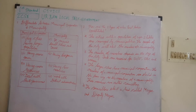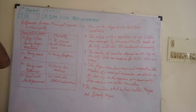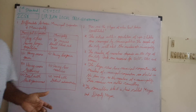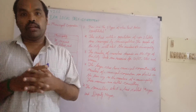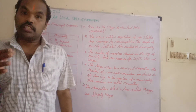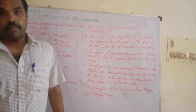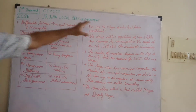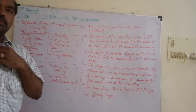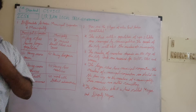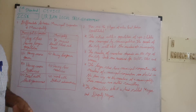Good afternoon students. Today we are going to see in the civic subject: urban local self government. Urban local self government — 'urban' means town or cities. Urban local self government mainly deals with local things, that is town panchayats and town-related things, mainly municipalities and municipal corporations.